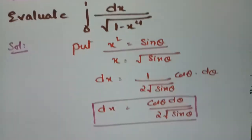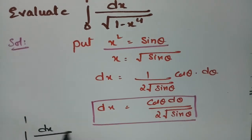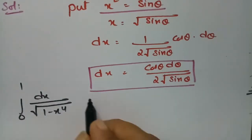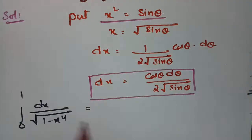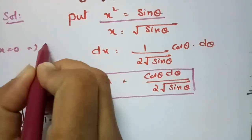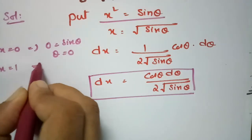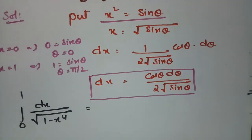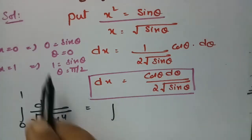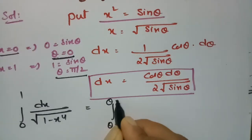If we substitute all these into the integral, the integral from 0 to 1 of dx/√(1-x⁴) transforms. With x² = sin θ: when x = 0, sin θ = 0 so θ = 0; when x = 1, sin θ = 1 so θ = π/2. So the new limits are θ = 0 to π/2.